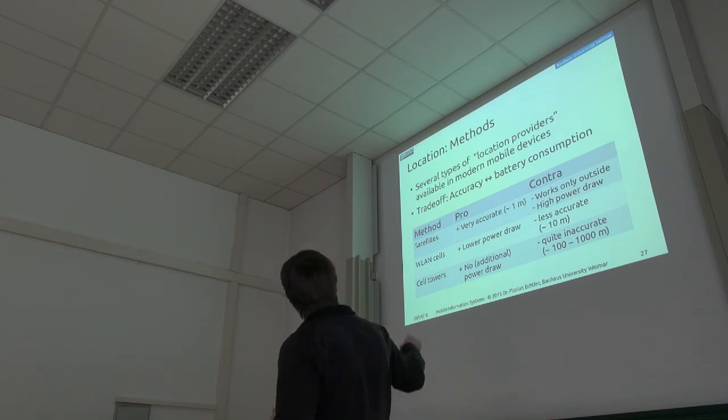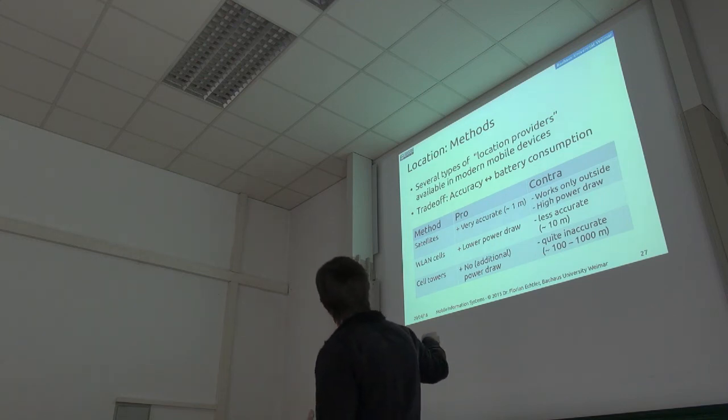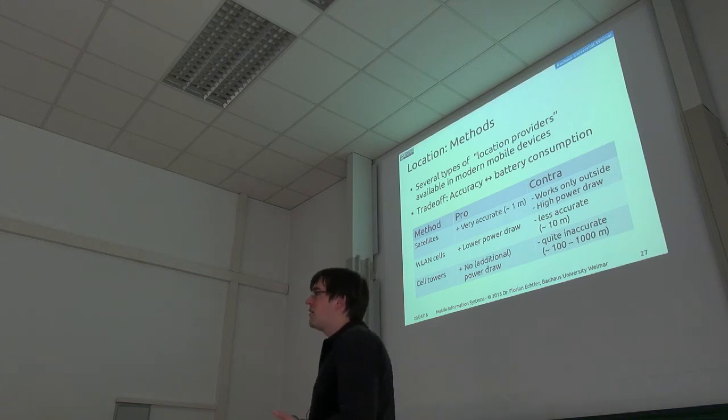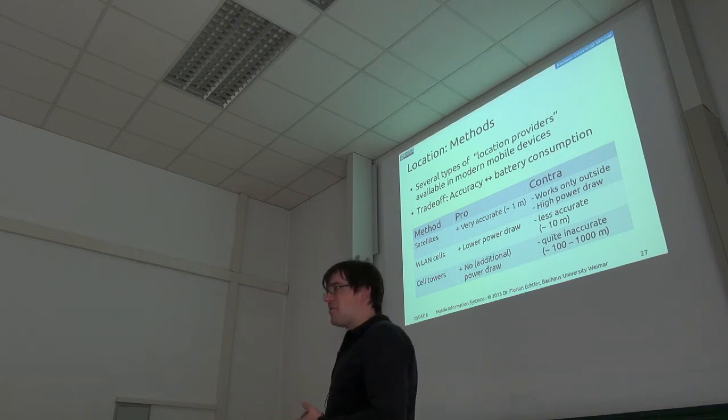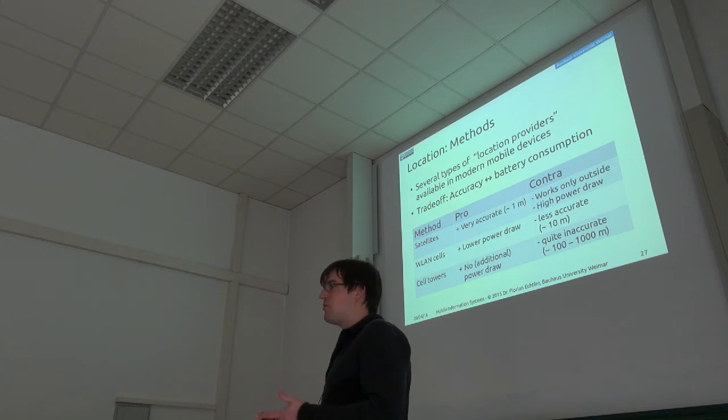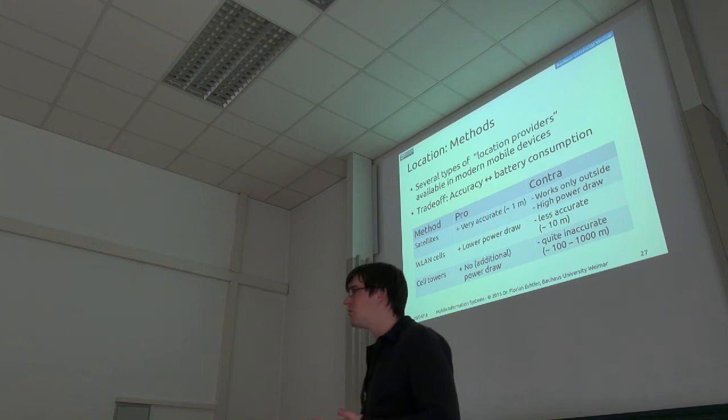On the other hand, if you use cell-based location using Wi-Fi, then we have a far lower power draw, but it's also less accurate. So it's maybe, in a very good case, down to 10 meters, but probably not much less. And if you use cell towers, again, same trade-off. The cellular connection in your device is probably active anyway, so it's more or less no additional power draw, but the accuracy is even lower, because the cells are bigger. So the major trade-off here is between how accurate you want your location information and how much battery are you willing to spend to get it.